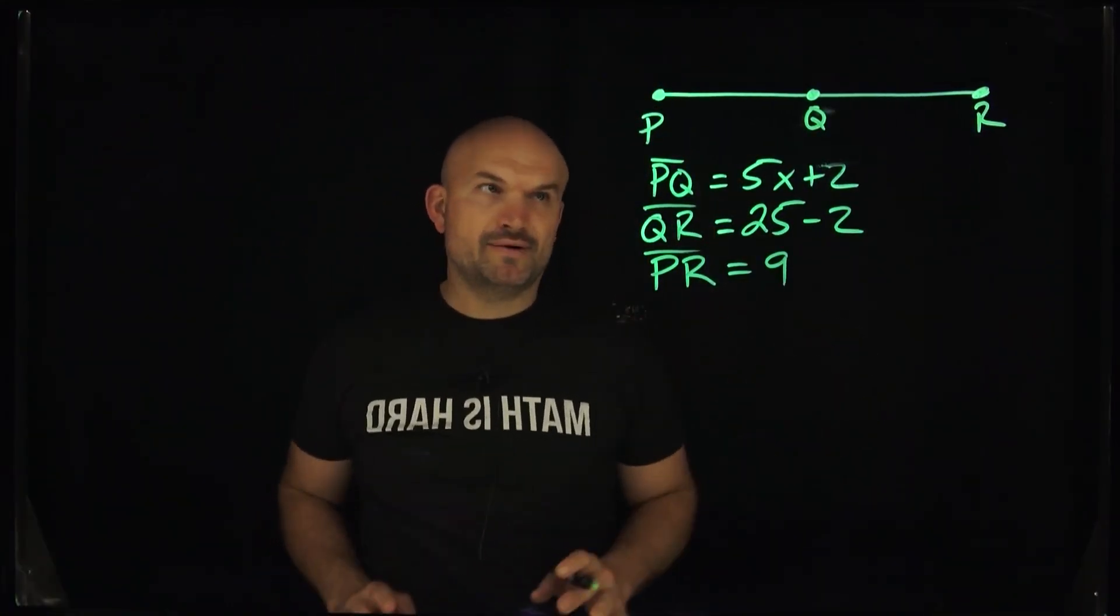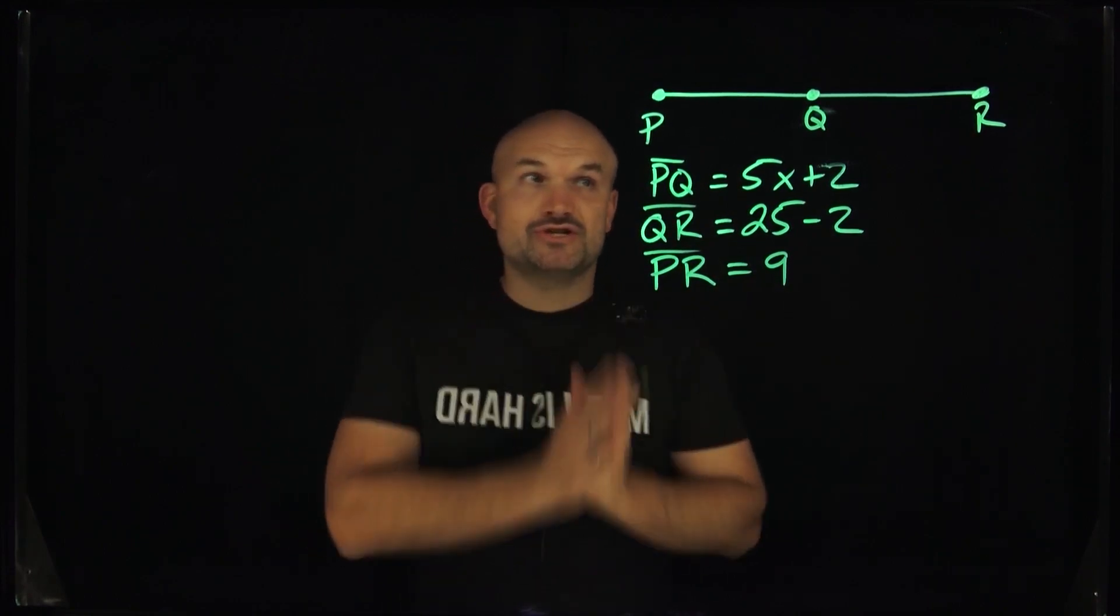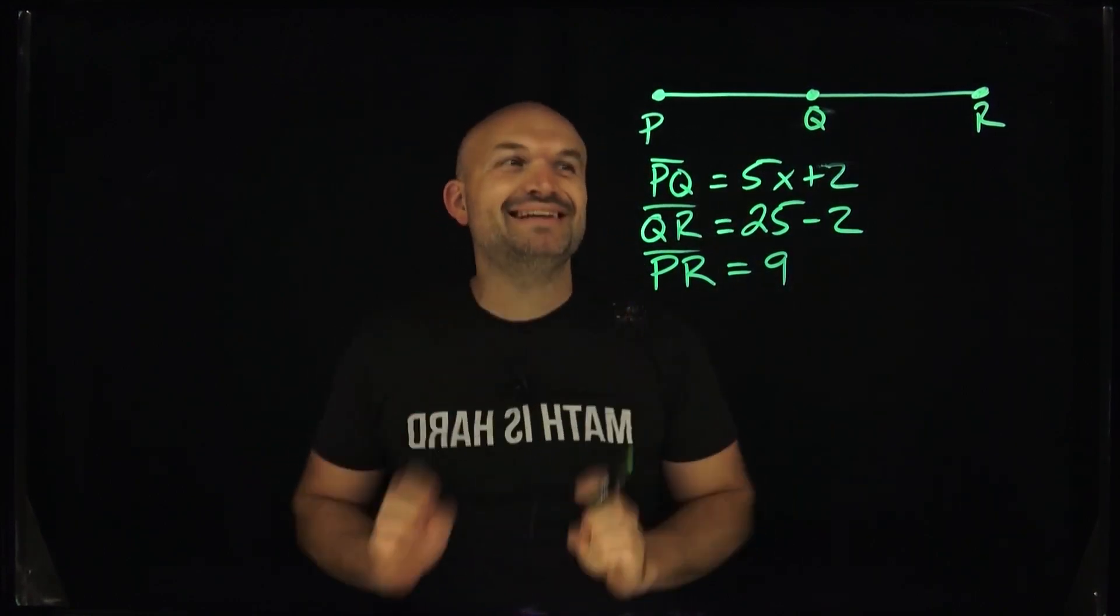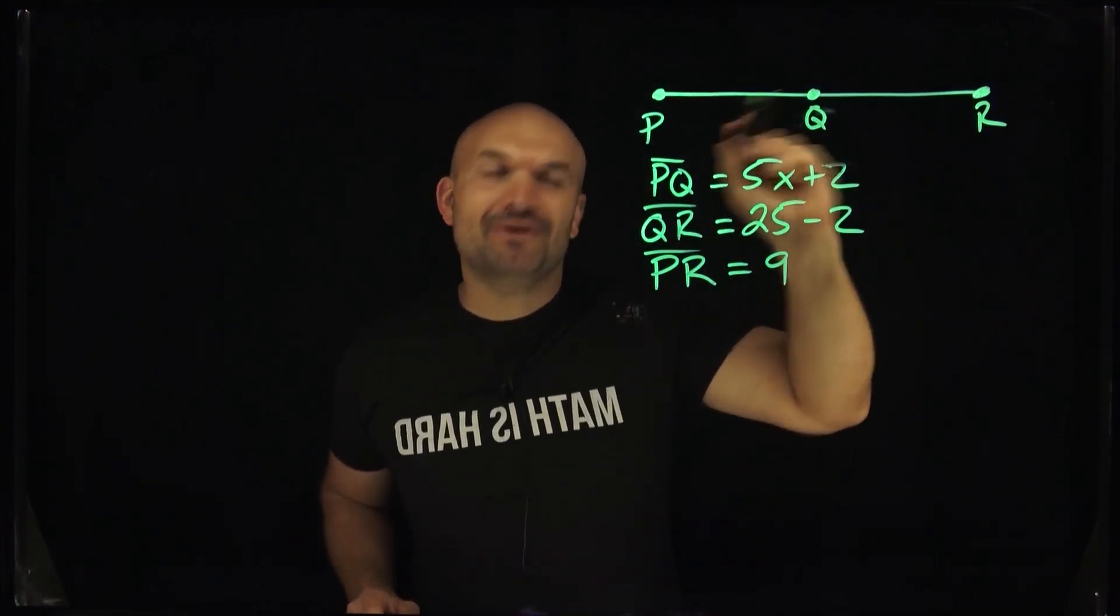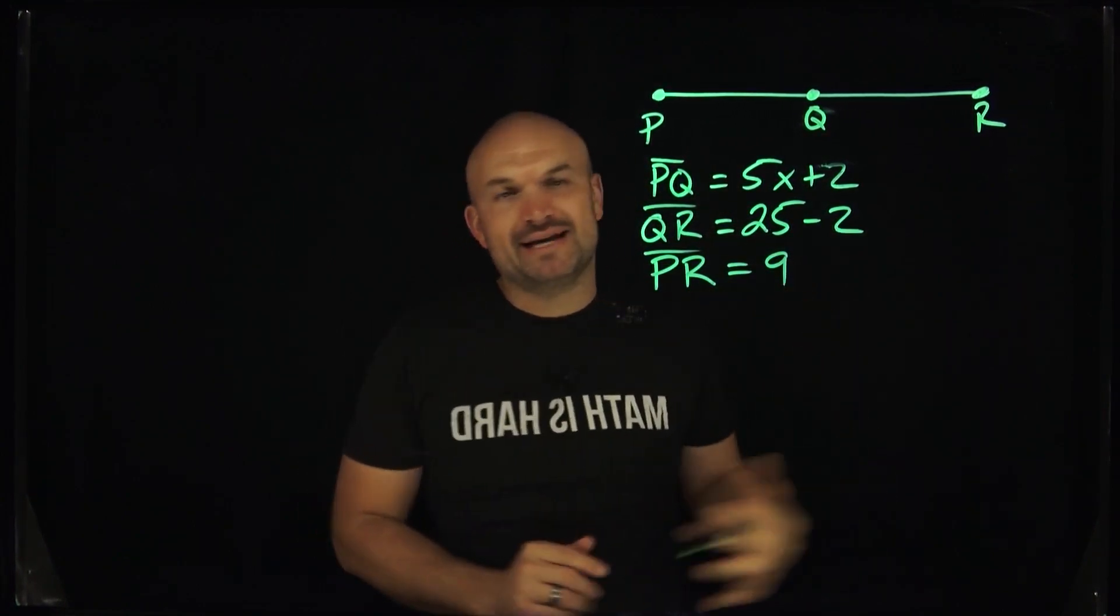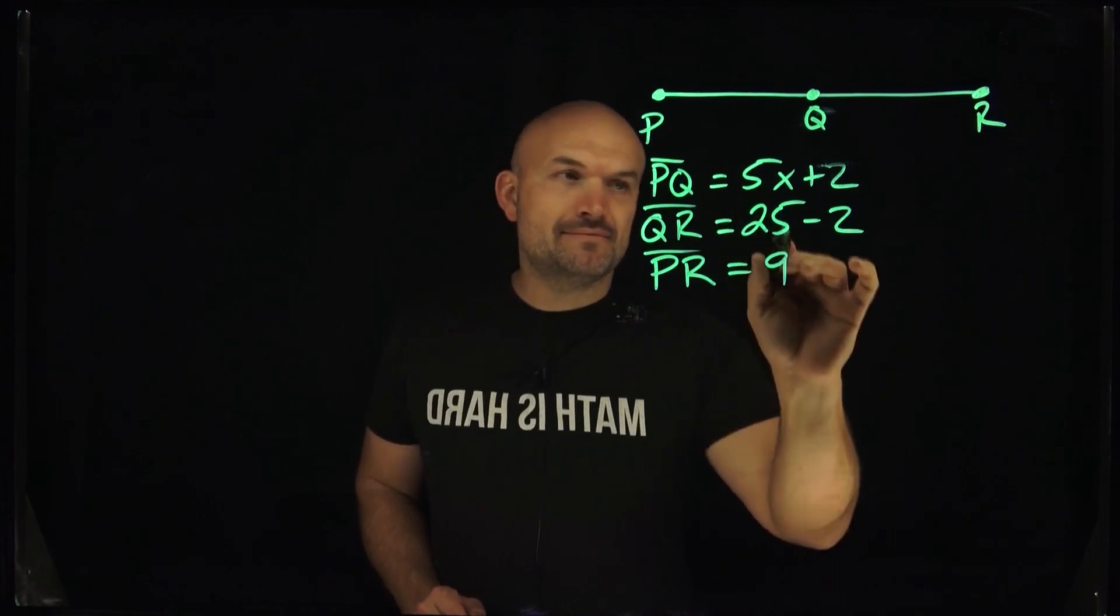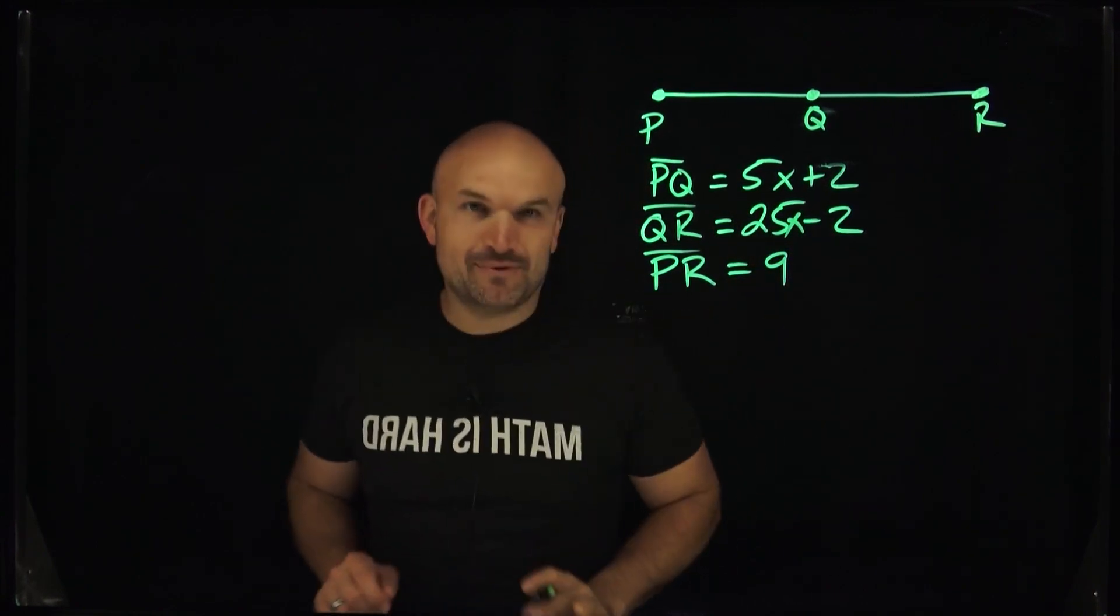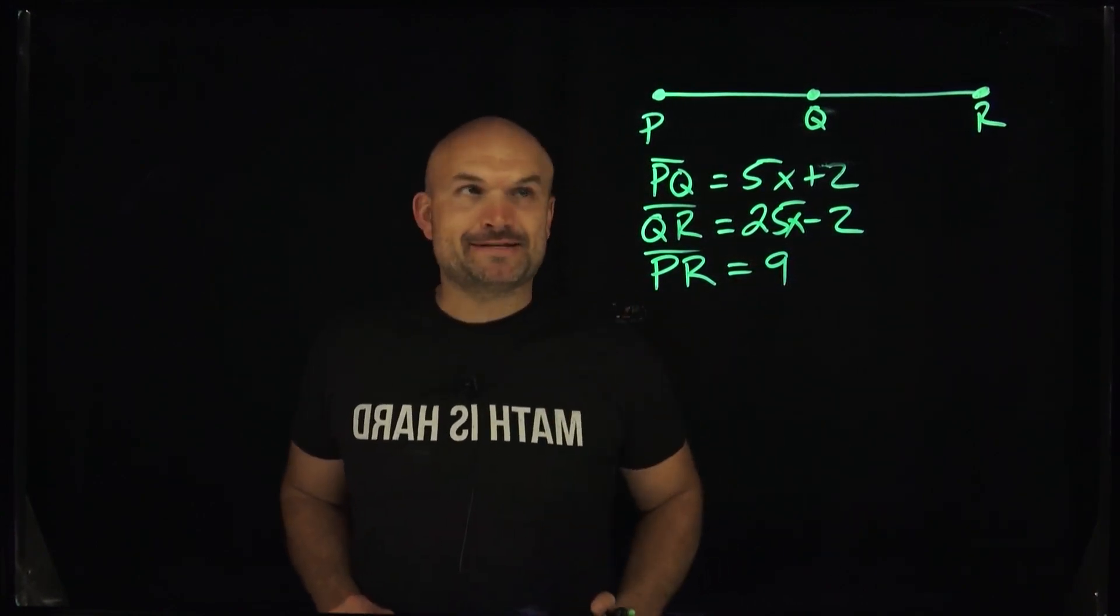OK, so in this problem, we have a lot going on. A lot of times, students would assume, because they see Q looks perfectly in the middle, that it is going to be the midpoint. Therefore, I can set 5x plus 2 equal to 25x minus 2. But that is not the way to do that. Please do not do this.